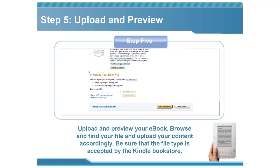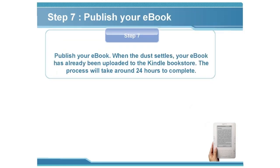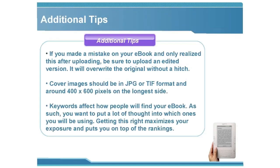Step five: Upload and preview. Browse and find your file and upload your content accordingly — be sure the file type is accepted by the Kindle store. Step six: Enter price. Enter the retail price — the minimum is set at $0.99 and the maximum is $200. Note that Amazon keeps the lion's share of profits, so consider this when pricing. Step seven: Publish your ebook. The process will take around 24 hours to complete.